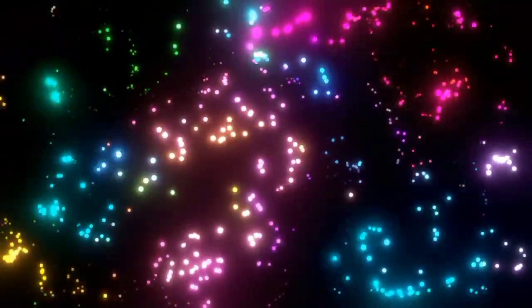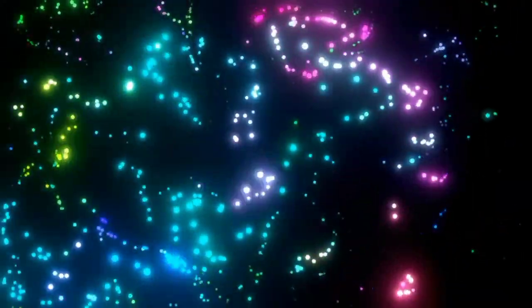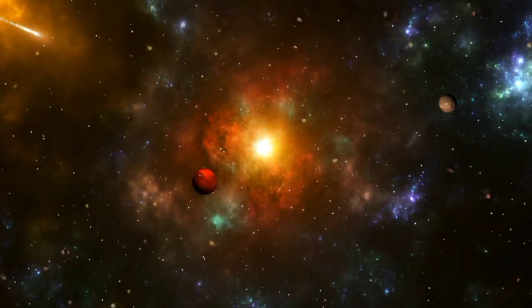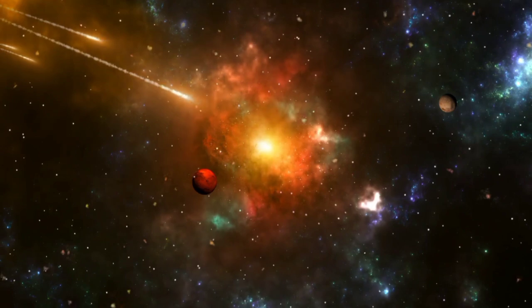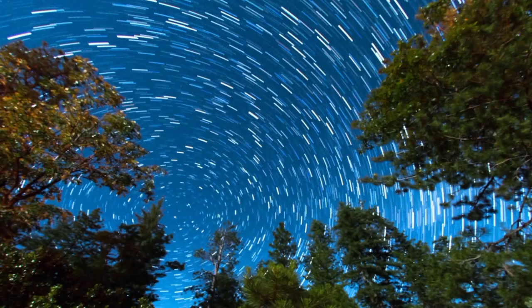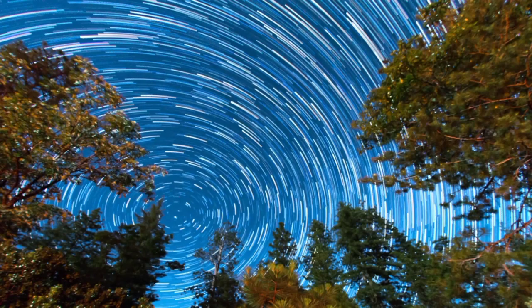Astronomers believe that many hypervelocity stars in the Milky Way were ejected from Andromeda. Similarly, simulations and data from missions like Gaia, which maps the positions and velocities of stars in our galaxy, support the idea that Andromeda's gravitational influence is already reshaping the Milky Way's stellar population.